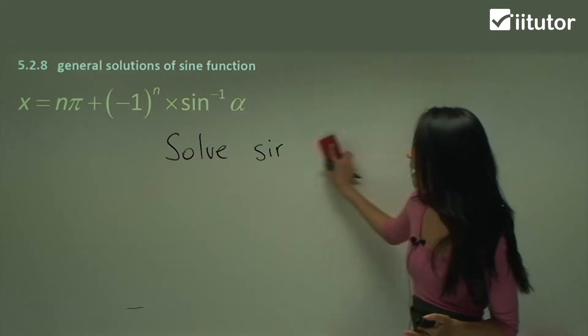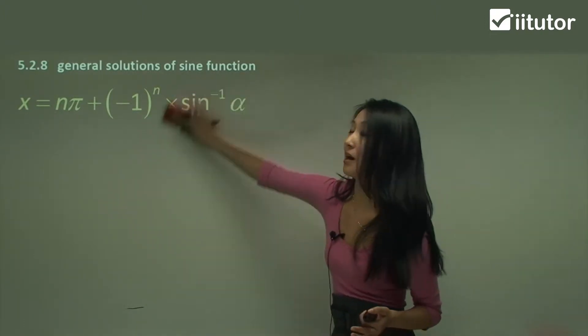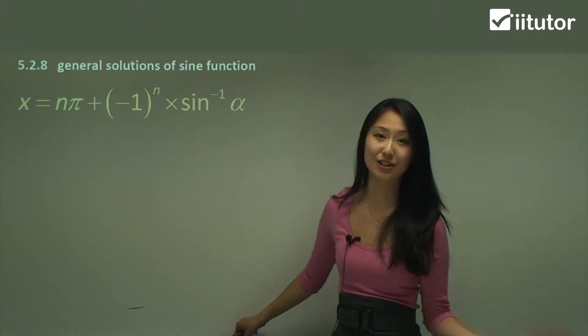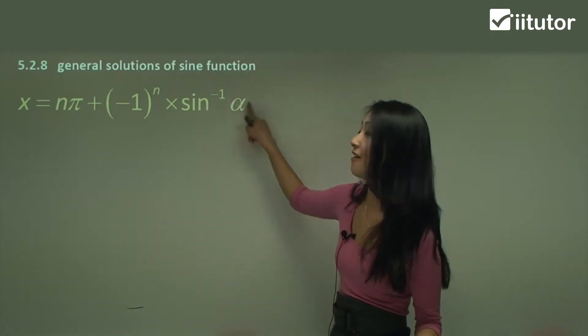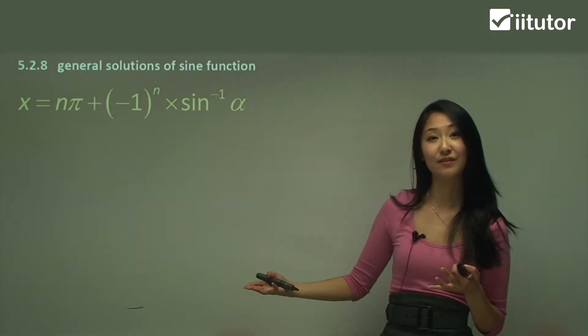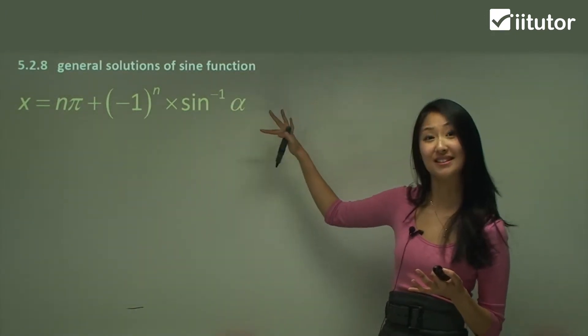Now the n is the integer where you just substitute numbers such as 1, 2, 3 etc. in and this is our alpha so our angle or our value. Alright let's see how we use this now in the questions.